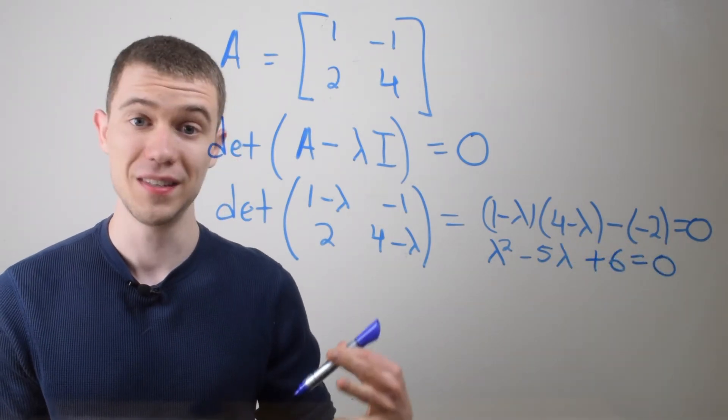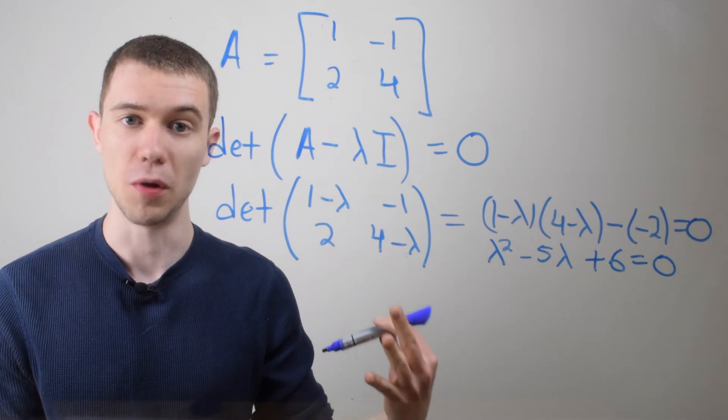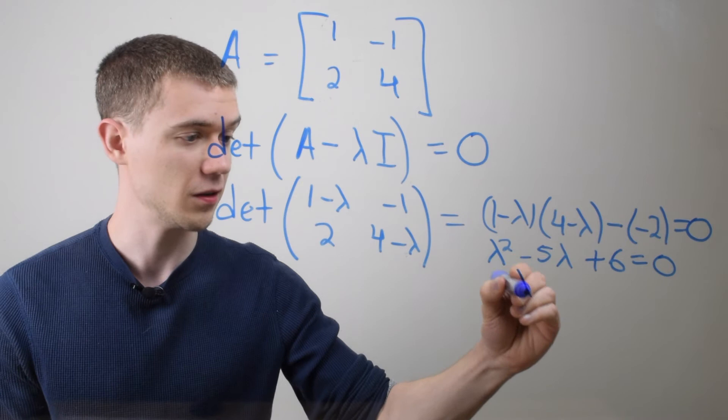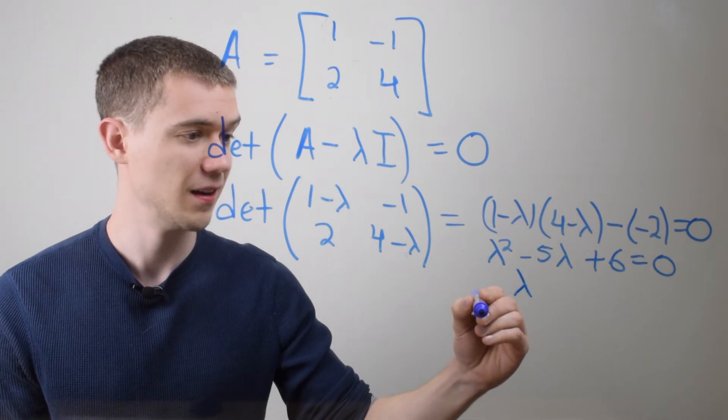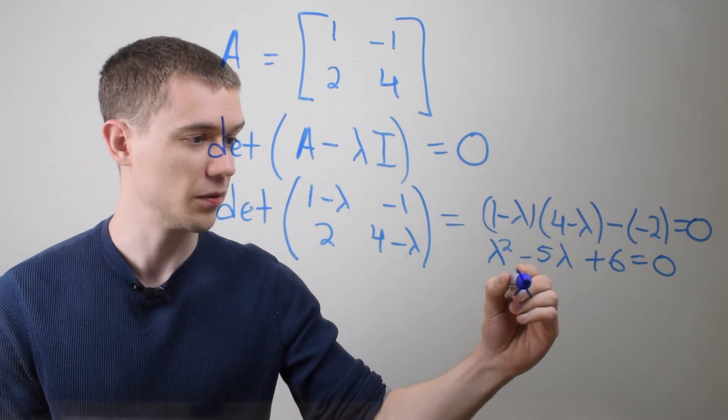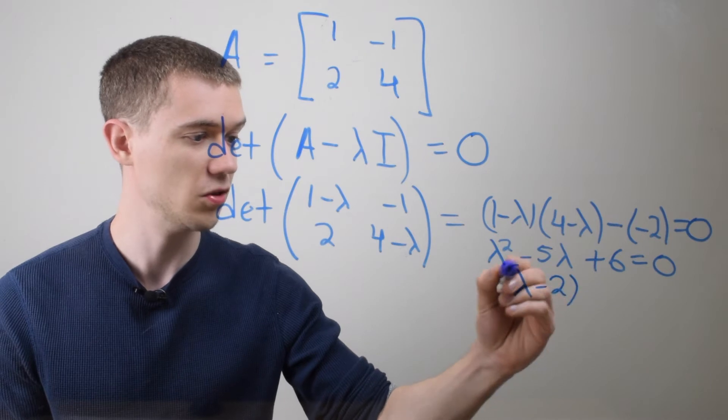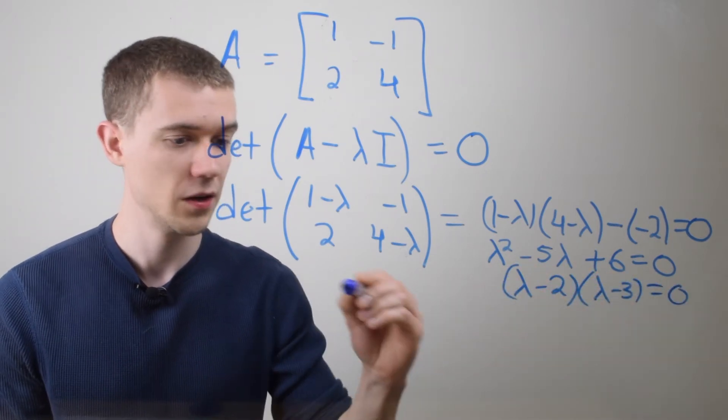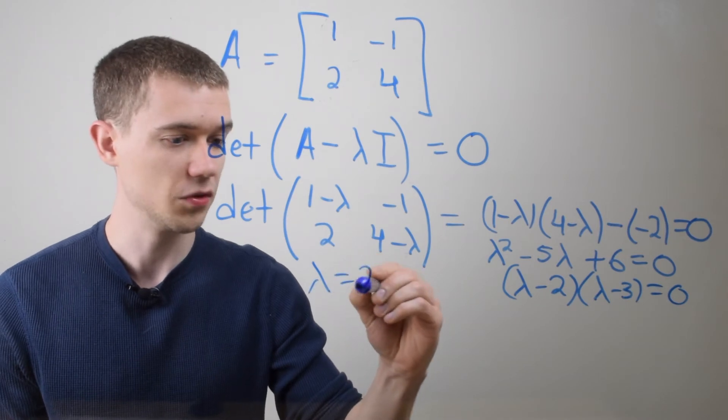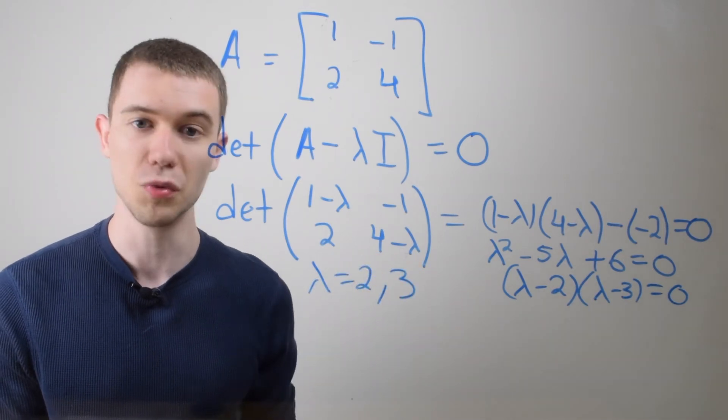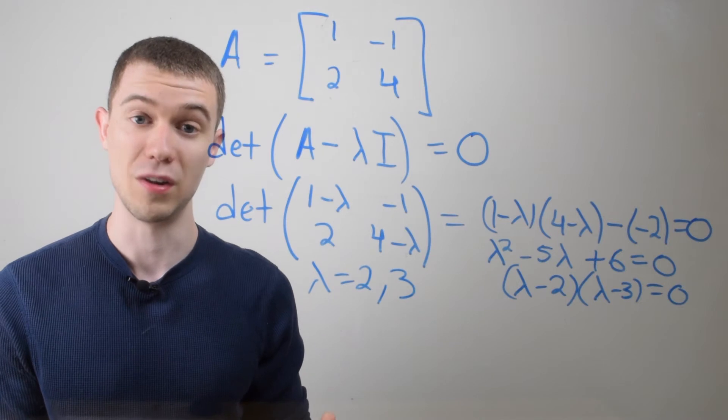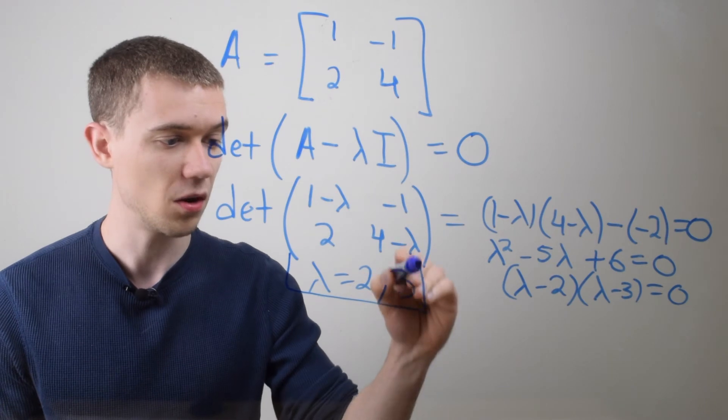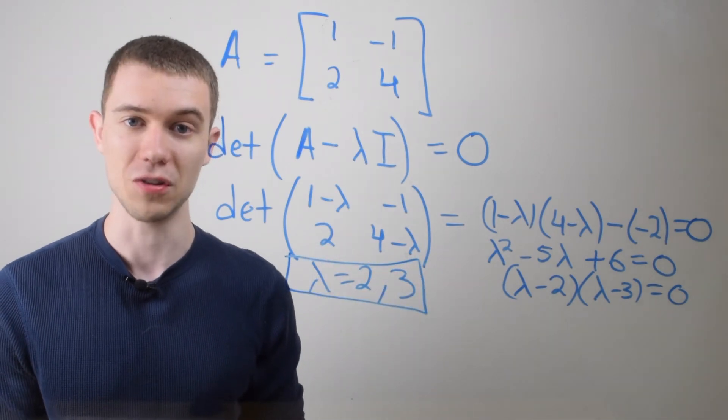And so this is just a second degree polynomial which you can solve. So I think this factors pretty nicely, right? Two numbers that add to -5 and multiply to 6. I think -2 and -3 do it. So it looks like λ = 2 and λ = 3 solves this equation. This is sometimes called the characteristic equation. And these are the eigenvalues of this matrix.